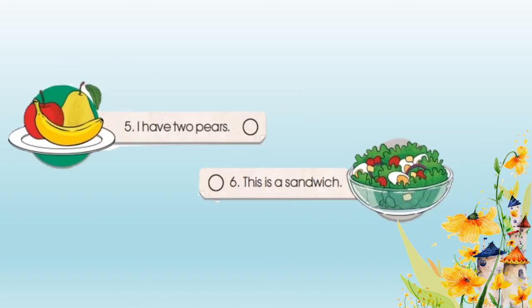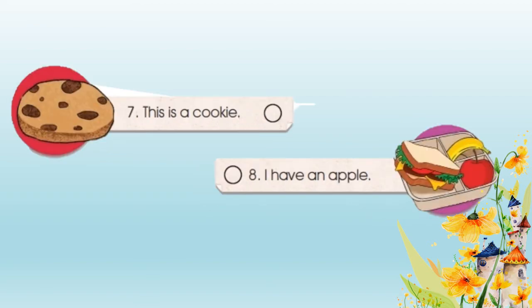Let's move. Number 5: I have 2 pears. Look at the picture — we have a banana, an apple, and only 1 pear, so you put a cross. And number 6: this is a sandwich. Yes, you put a cross — here we have salad. Number 7: this is a cookie. Well done, we put a tick. And the last one, number 8: I have an apple. Look at the lunchbox — here we have a lunchbox with a sandwich, a banana, and an apple, so you put a tick.